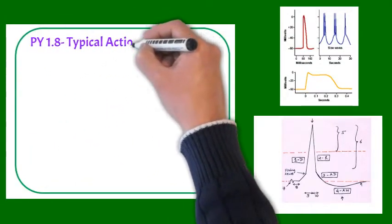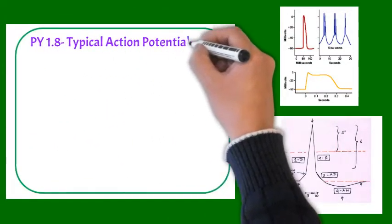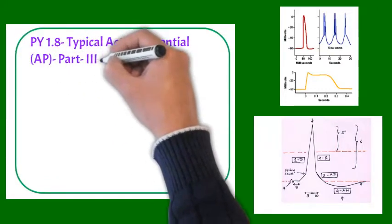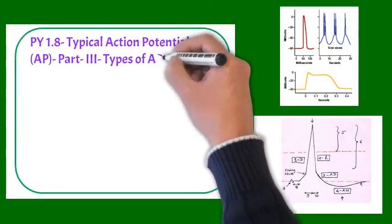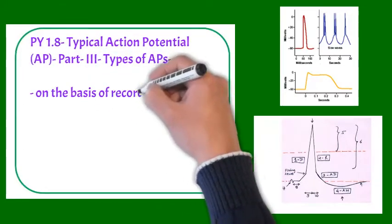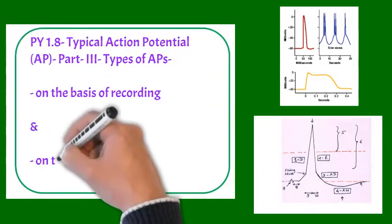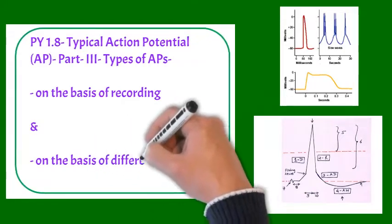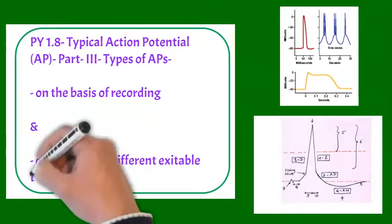Namaste to all. It's Physiology Competency 1.8 Action Potential, part 3, in which we are doing types of action potential. Types can be on the basis of recording and also on the basis of excitable tissues, meaning different excitable tissues may have different types of action potential.